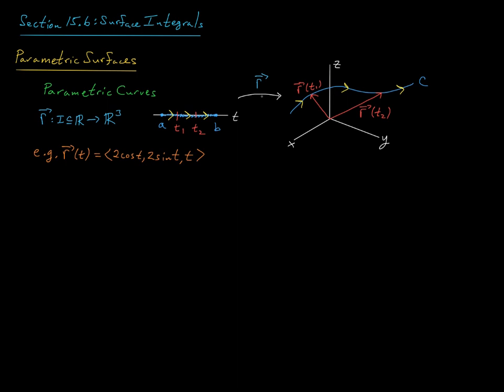So one way you can conceptualize the action of this vector function r is to think of this interval we're letting t vary over as, say, a piece of wire. And so our vector function r here is deforming this wire into the shape of this curve c in r3.